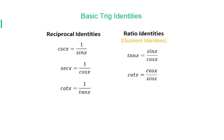Today's lesson is about basic trig identities. First of all, we have reciprocal identities. Cosecant x equals 1 over sin x. Secant x equals 1 over cos x. Cotangent x equals 1 over tangent x.